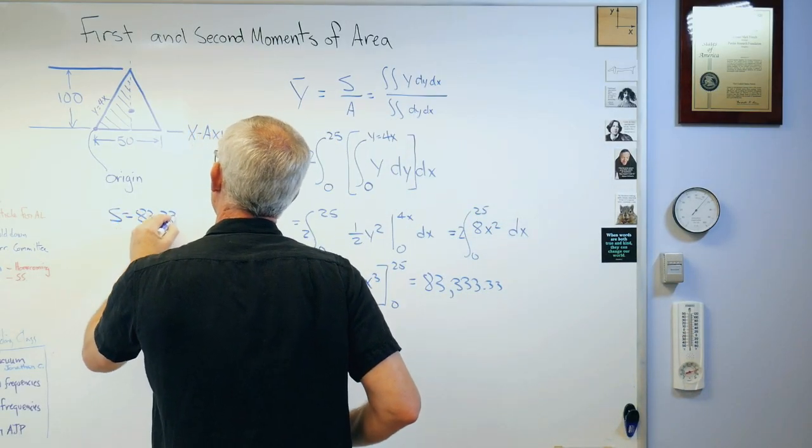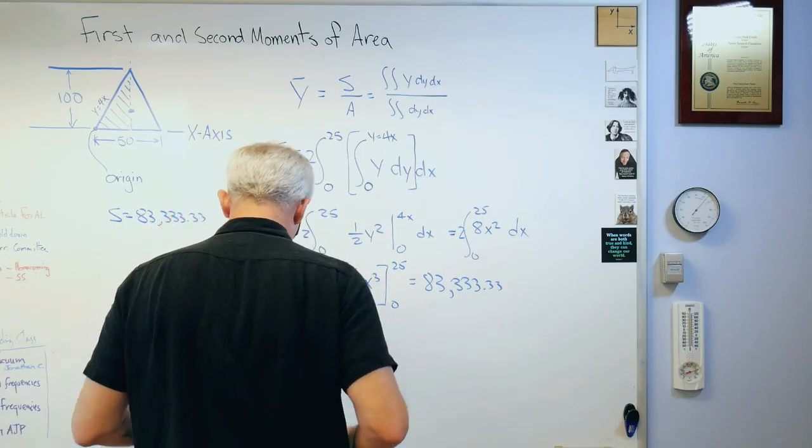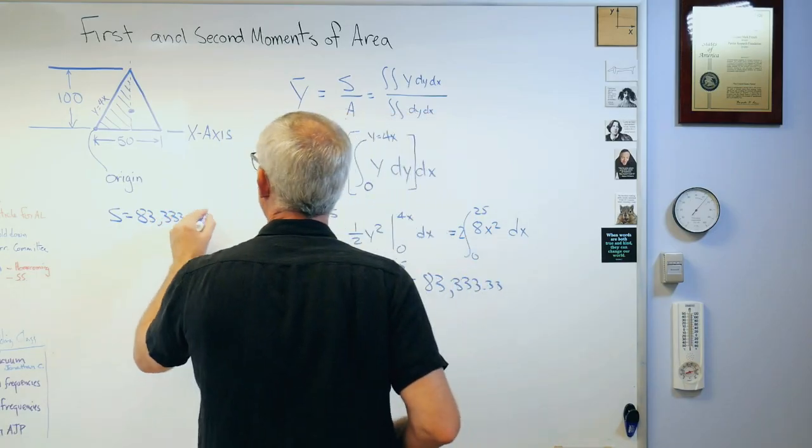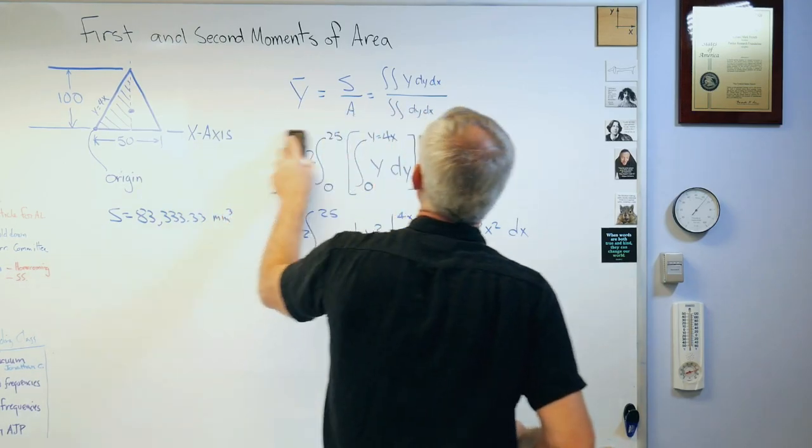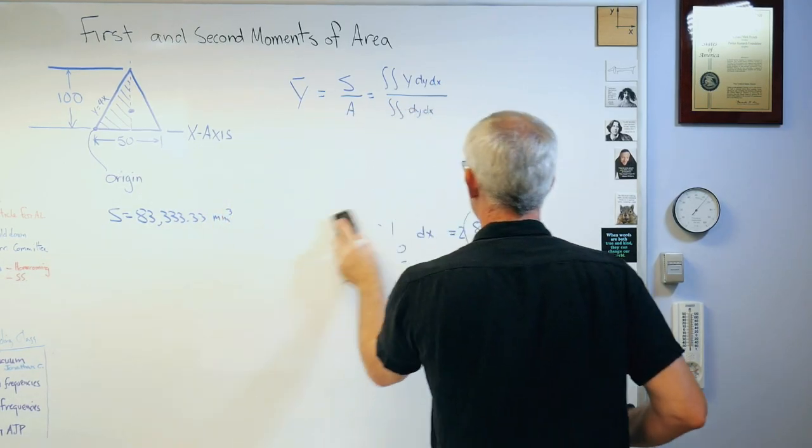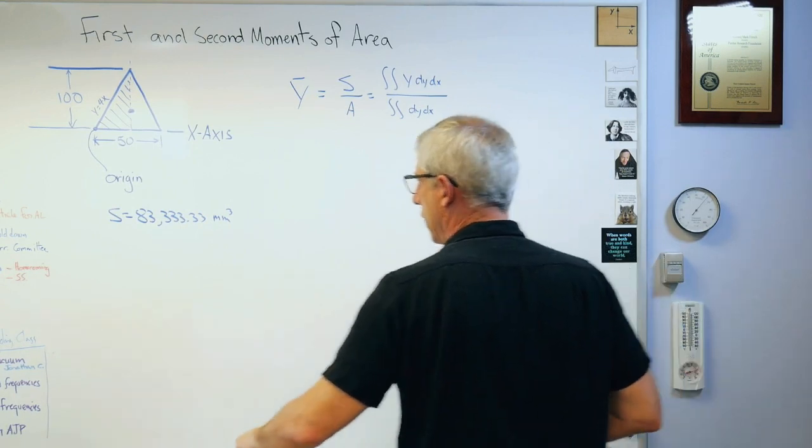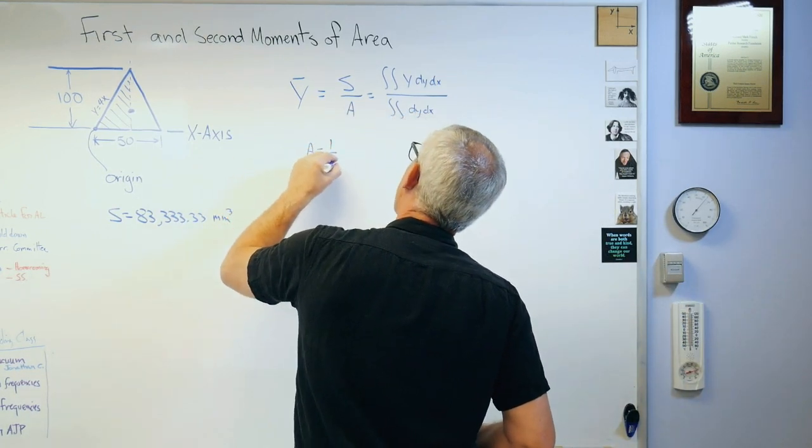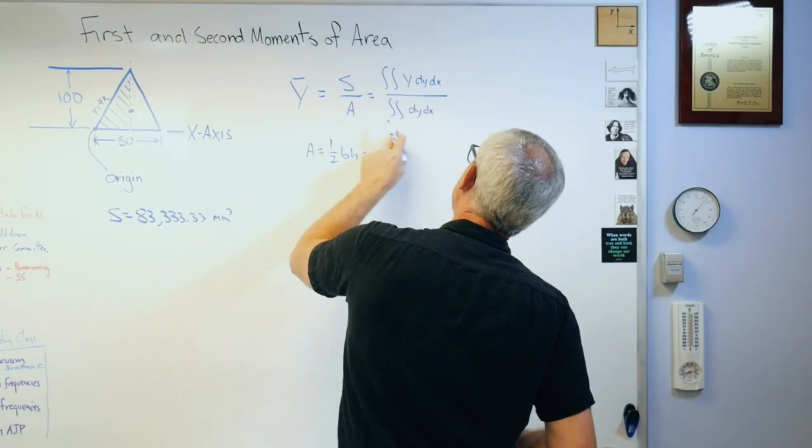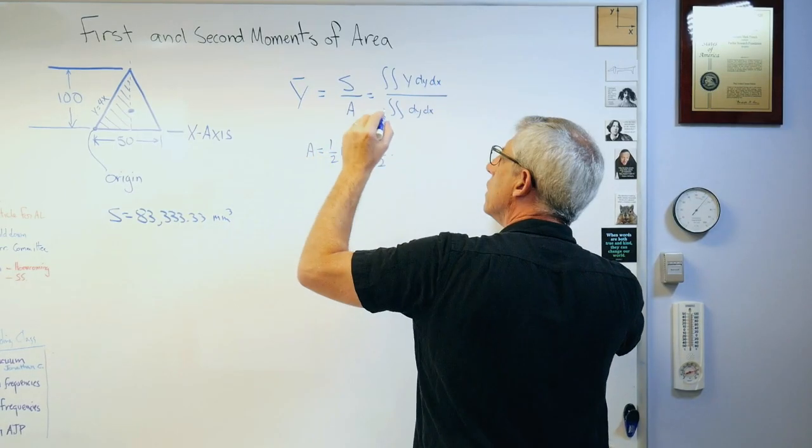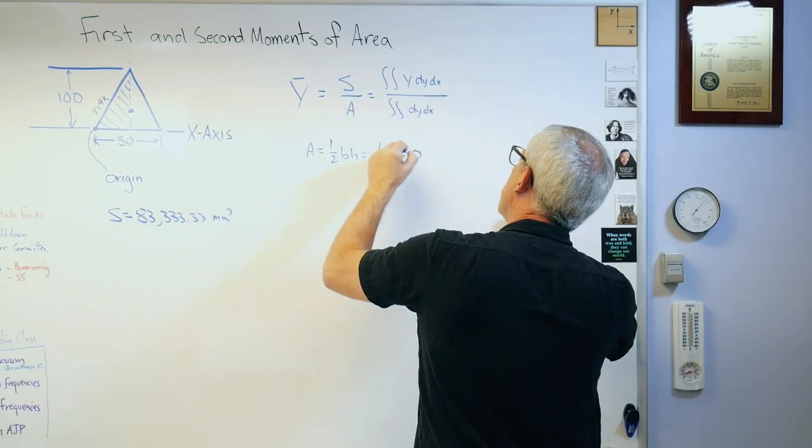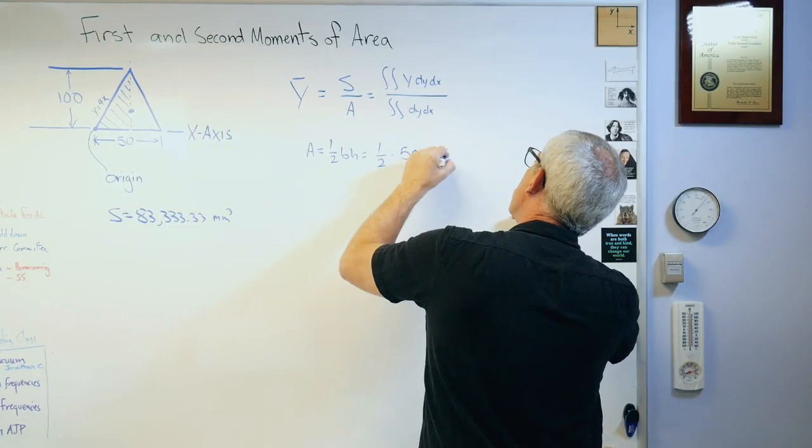So I got that number. I know that s equals 83333.33. That's going to be in millimeters cubed. Now the next thing I need is the area. Well, that's pretty easy because I've already got that tabulated. I already know that area is one half bh.